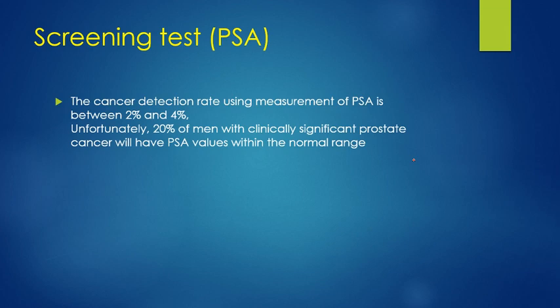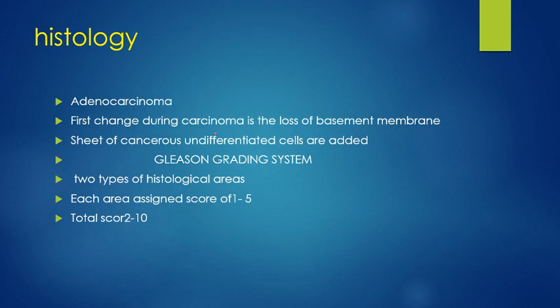The screening test is PSA — prostate specific antigen — and it can detect only 2 to 4% of the disease. Twenty percent of men with clinically significant prostate cancer will have a PSA value within the normal range.